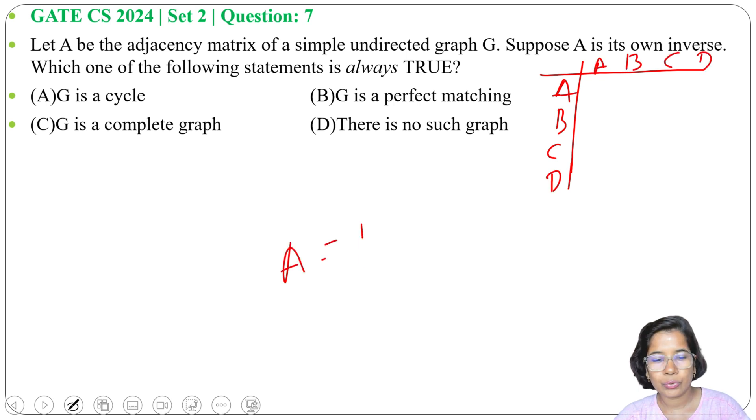A equals to A inverse means A square equals to I. So in one row or in one column there can be only single one, then only A square will be I. And it's a simple undirected graph so there are no self loops.